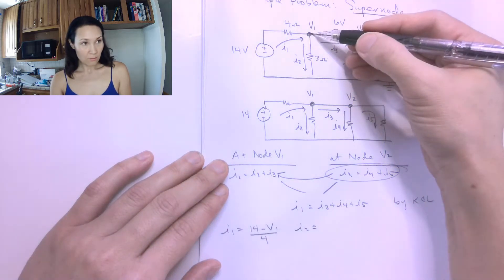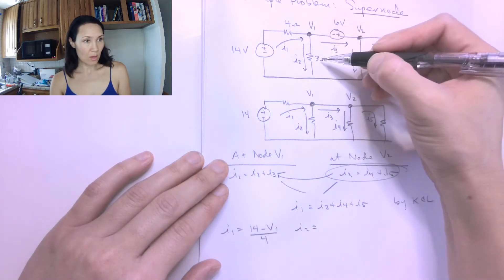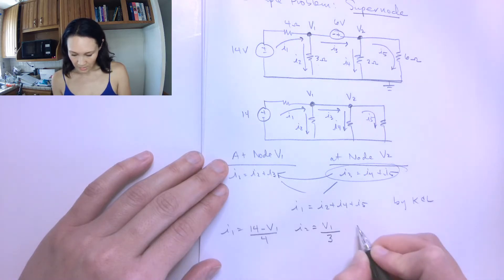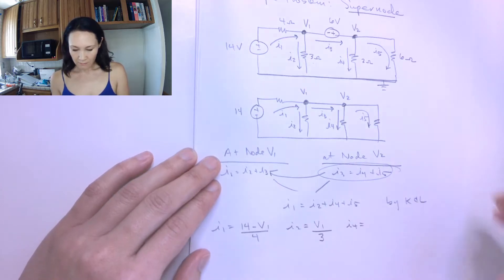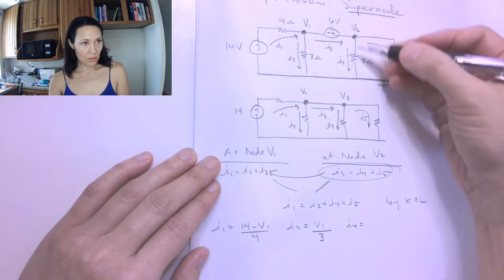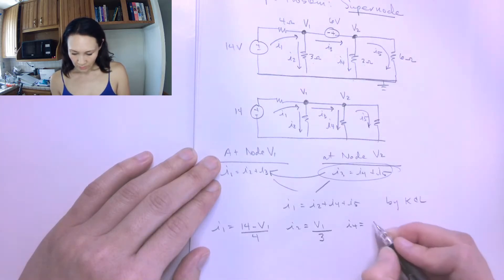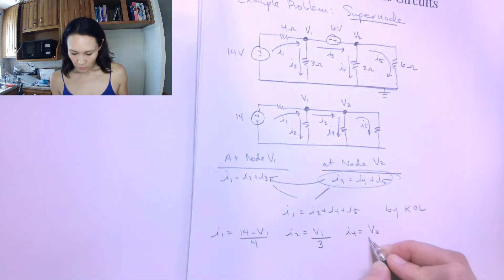I2 is going to be V1 minus 0 over the resistor between, which is 3. V1 minus 0 is just V1 over 3. I don't have to worry about I3 because I substituted it out. So my I4 is V2 minus 0 divided by the resistor between, which is 2. So that's just V2 over 2.